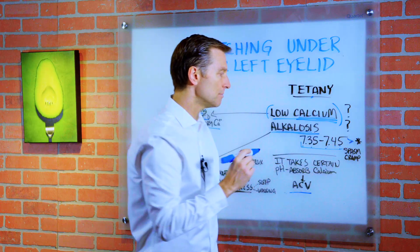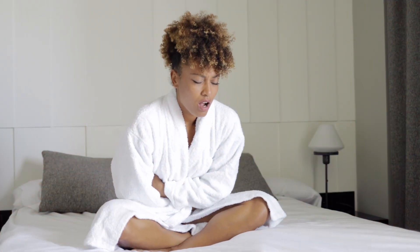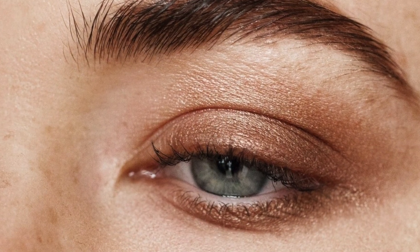So with alkalosis, it's above 7.45. What happens if your pH is above that, you start getting spasms, cramps, tetany, and there's a whole series of other issues that could happen.